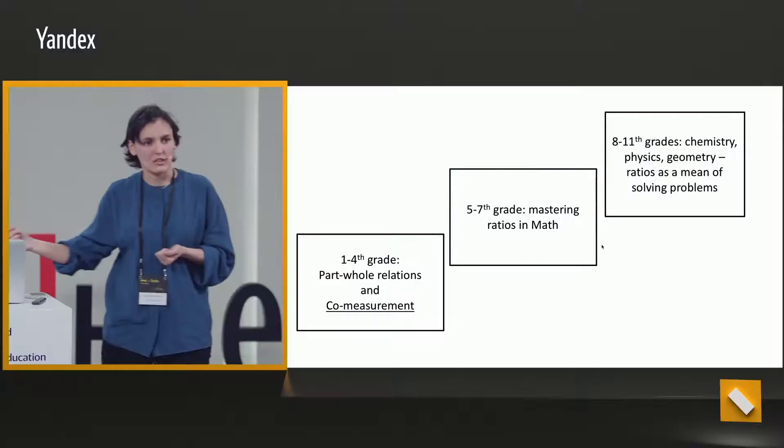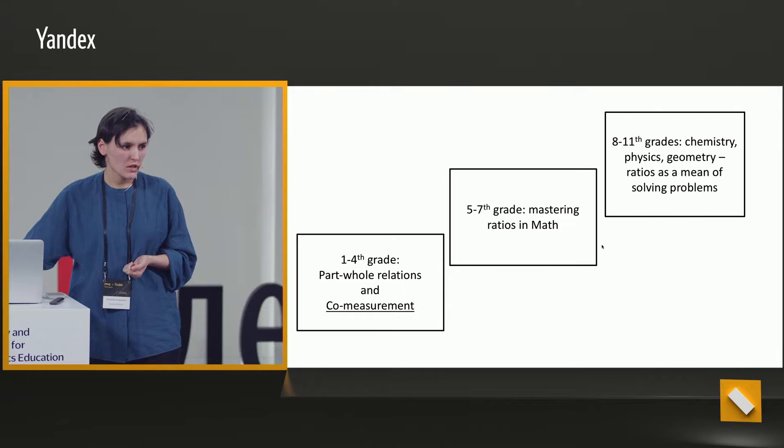The child needs to tackle a situation where there are two values which are combined. This is the fraction whole or part-whole ratio, and the same ratio is something the child tries to do in chemistry. This is a dead end. Our suggestion is to use co-measurement, which should be done in primary school.